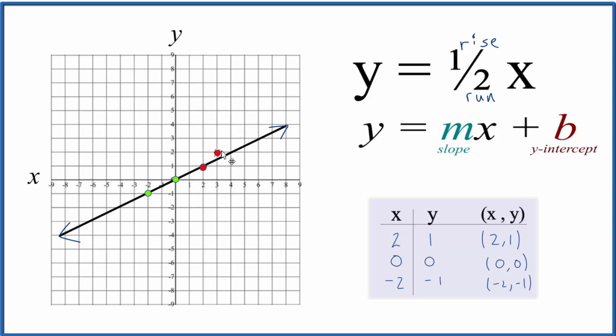From there, we go up 1 and over 1, 2. And we can keep doing this. And all these points, they're on our line. Likewise, we could go down 1 and over 2, down 1 and over 2. And those points will also be on the line for y equals 1 half x.